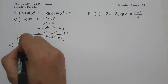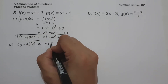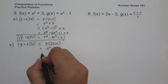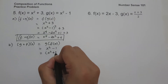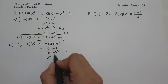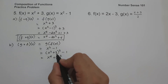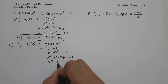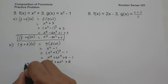On letter b, let us have g circle of f of x, and this will be g of f of x. The value of g of x is x squared minus 1, and this time x is f of x, which is x squared plus 3. So this will be x squared plus 3 raised to 2 minus 1. Expanding: x squared times itself is x to the 4th, x squared times 3 gives 6x squared, and 3 times itself is 9 minus 1. So we get x to the 4th plus 6x squared plus 8, and this will be the value of g circle of f of x.